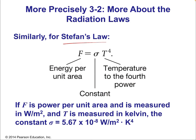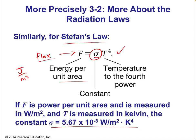Stefan's law: F = σT⁴, where σ is an empirical constant equal to 5.67 × 10⁻⁸ W/m²/K⁴. This is the formula you can use to solve for flux or energy per area, though you might also be given the energy per area and have to solve for the temperature. So temperature has a huge effect on energy, especially for things like stars.